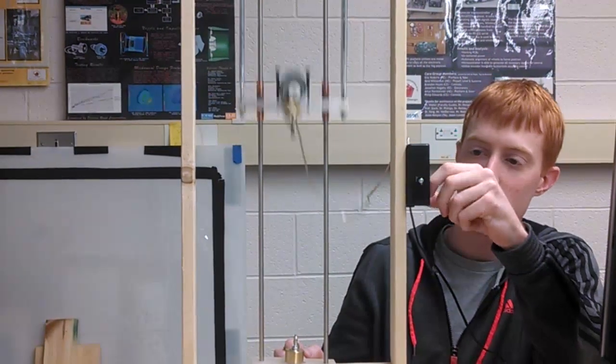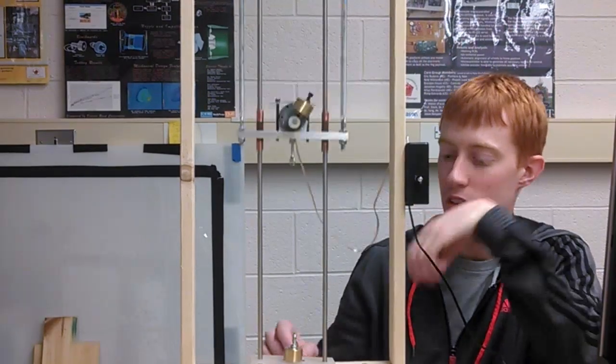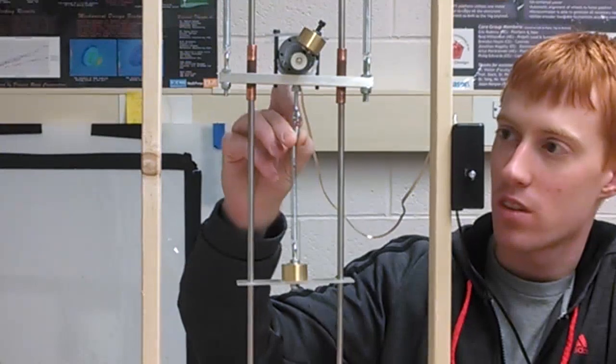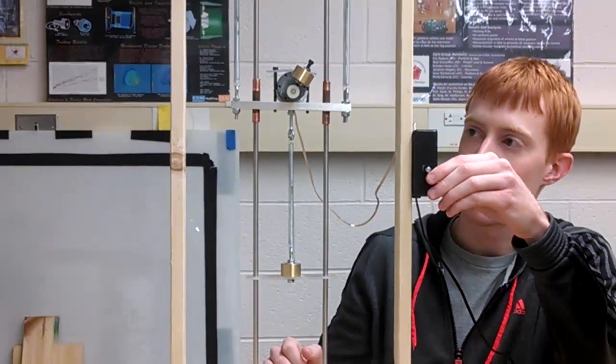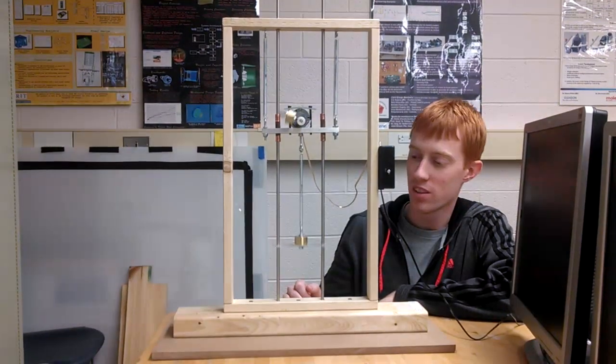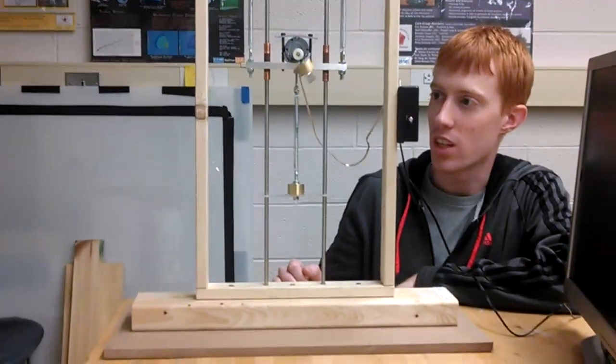Now, if we did our calculations right, when we turn this off and attach our DBA to the bottom, we should see a cancelling of the movement of the platform and the transfer of all the energy down to the bottom mass, which is what you can see here.